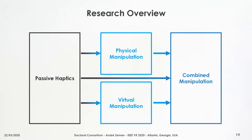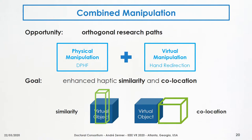This concludes the overview of my past PhD research efforts. Finally, I'd like to introduce my plans for my upcoming and remaining PhD research, which is to combine both physical and virtual manipulation. I'd like to introduce a research experiment that showcases how a combination of dynamic passive haptics and hand redirection can better solve the problems of haptic similarity and prop collocation by combining both orthogonal research paths. I'd like to show that the combination of both techniques can yield enhanced effect ranges larger than those achievable with just the individual techniques, and can better compensate for dislocated props.